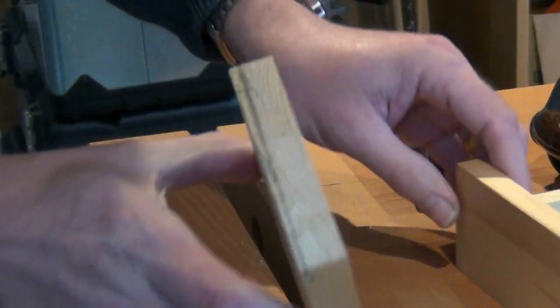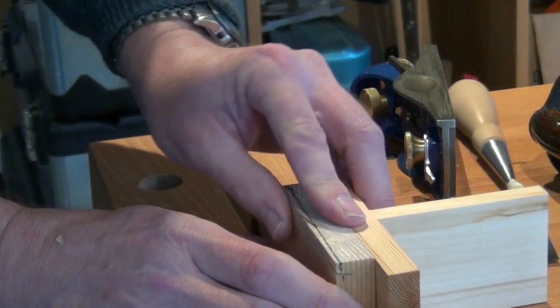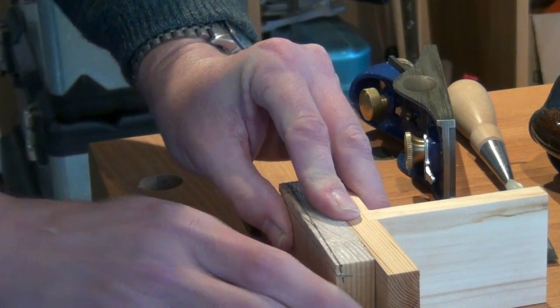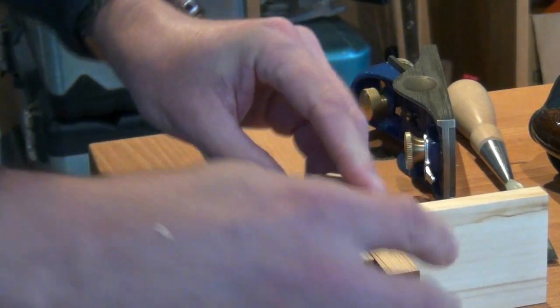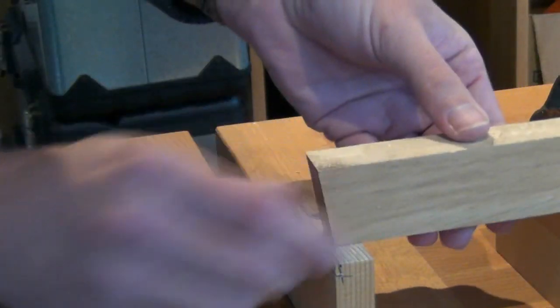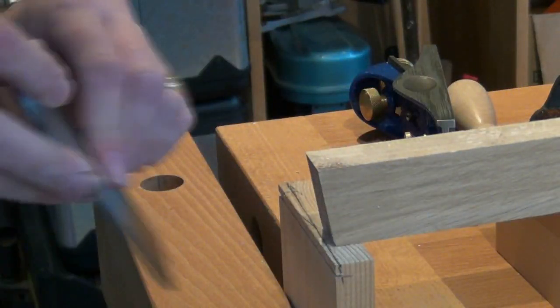Then at the vise, set the work up the same height as a support. And then we can put the angled block on and use it as a reference for the back of the chisel.